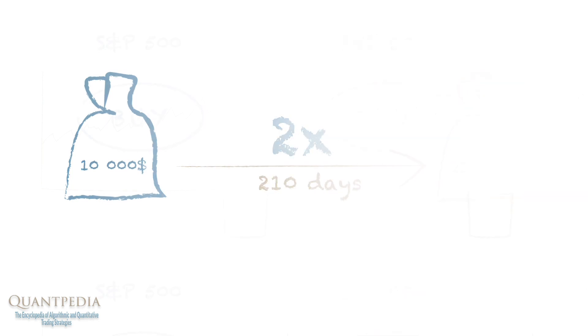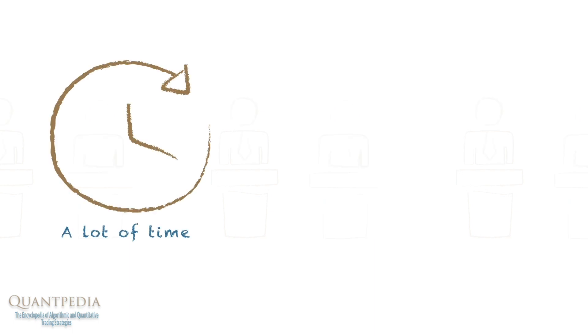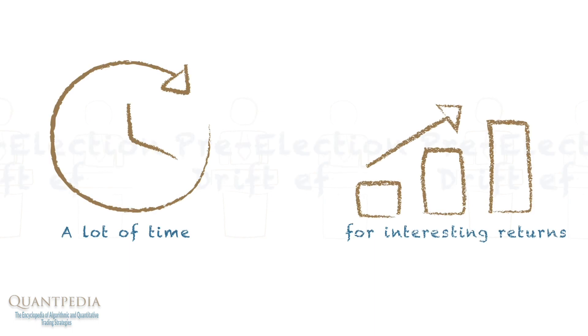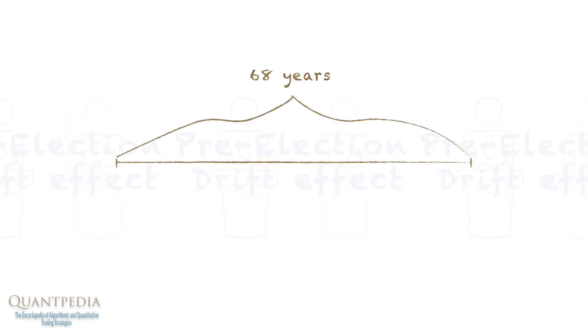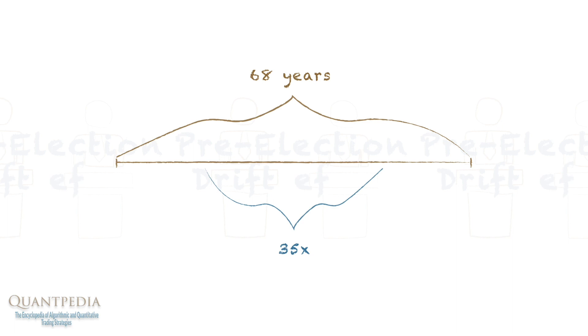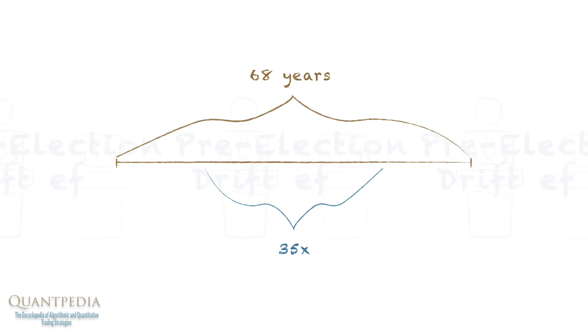Though, one strong capability stands next to a big disability. The strategy needs its time — a lot of it — to generate interesting returns. In the last 68 years, the pre-election drift occurred only 35 times, which is, in comparison to other calendar anomalies, not enough. That's why pre-election drift can only be a very small part of an investor's overall strategy.